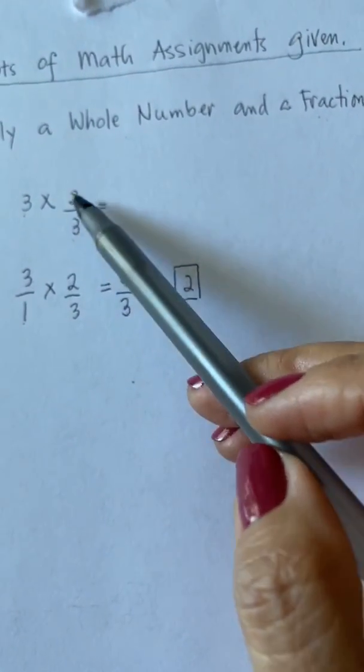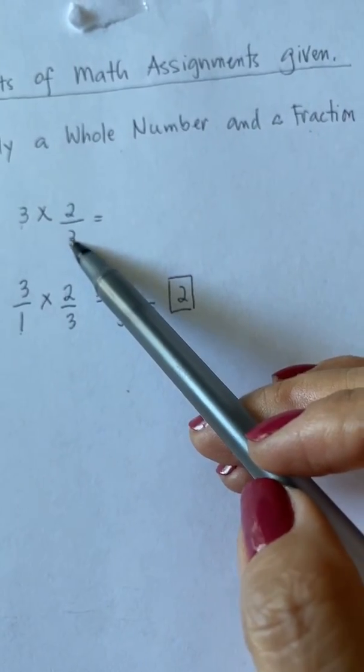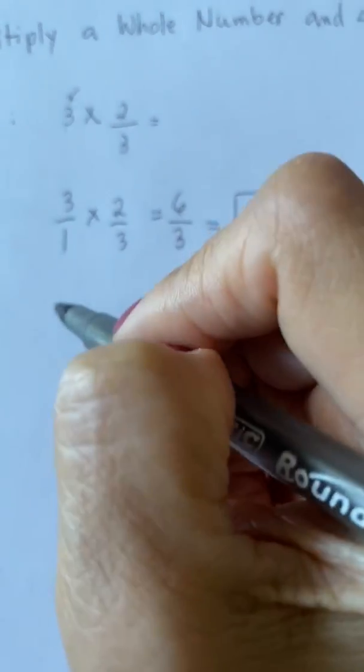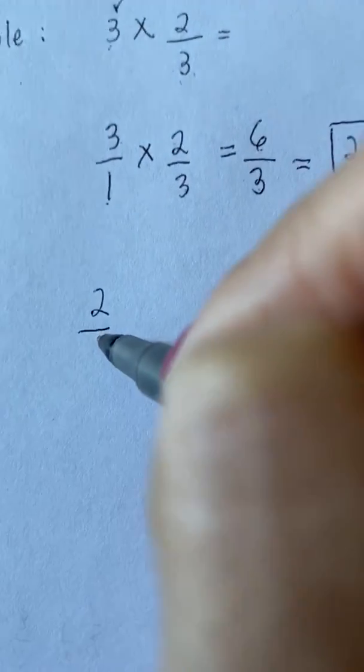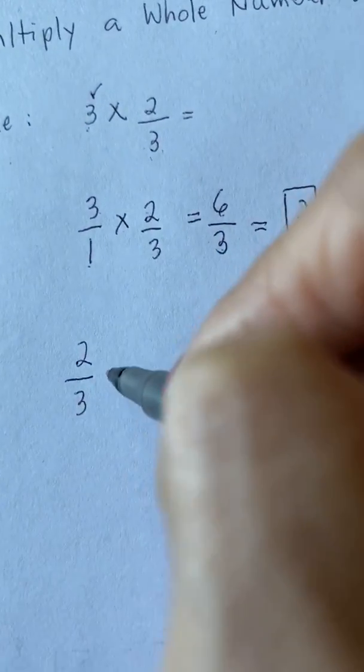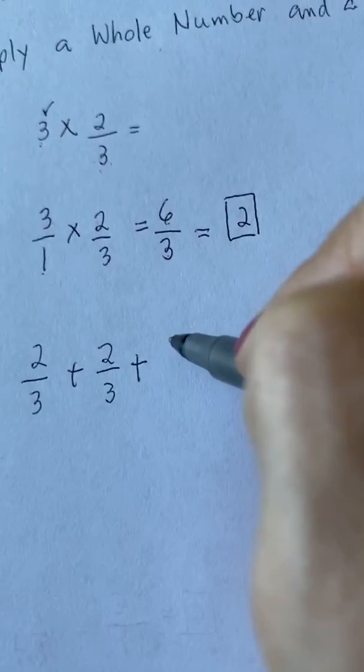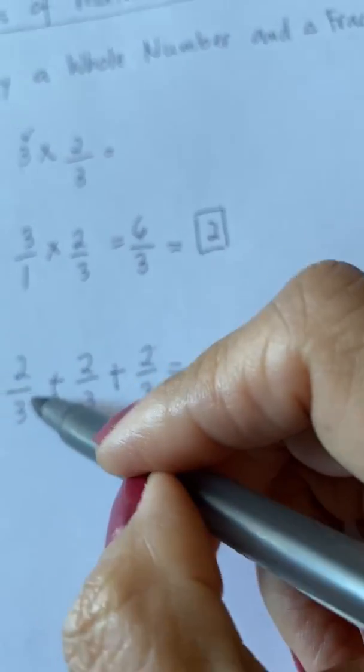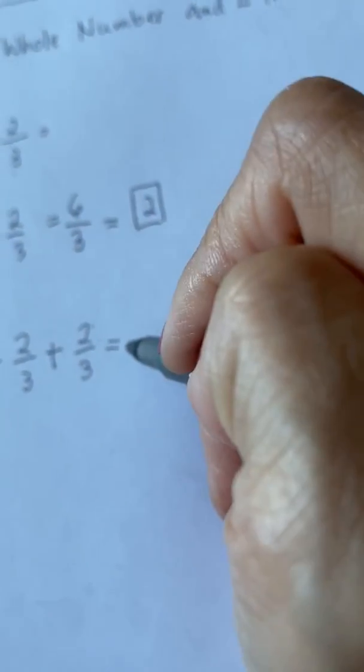To write this as an addition equation, we are going to write 2 thirds 3 times. Yes, write it 3 times. So we will have 2 thirds plus 2 thirds plus 2 thirds. For adding fractions, we don't add the denominators. We simply copy it.